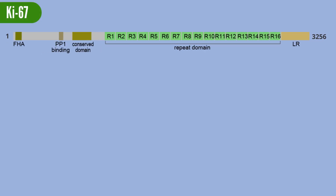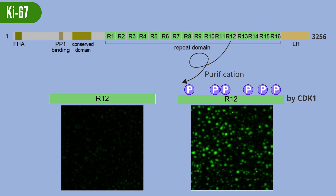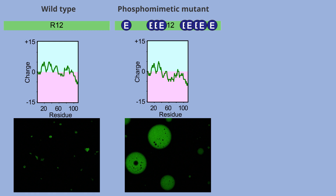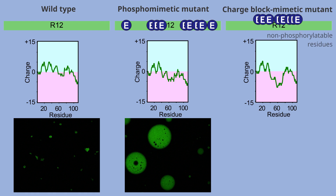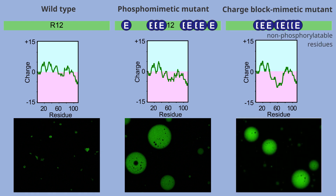Here are some results from in vitro experiments. We purified one of the repeats of the Ki67 repeat domain, and found that LLPS was significantly enhanced by phosphorylation by CDK1. Phosphomimetic mutation also had the same effect. Notably, when we mimicked the charge distribution of the phosphorylated form by replacing non-phosphorylatable residues, this could also mimic the LLPS enhancement.